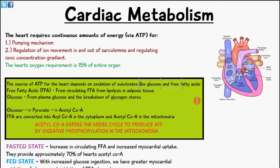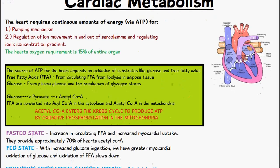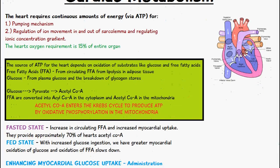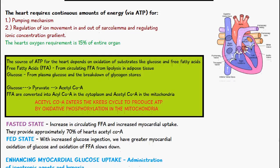The heart's oxygen requirements account for about 15% of the entire organ. The source of ATP for the heart depends on the oxidation of substrates like glucose and free fatty acids. Free fatty acids come from circulating free fatty acids in the blood, which come from lipolysis in the adipose tissue, while glucose comes from plasma glucose and the breakdown of glycogen stores.